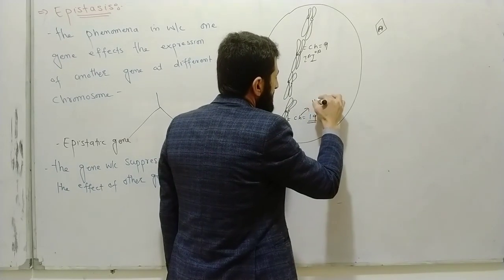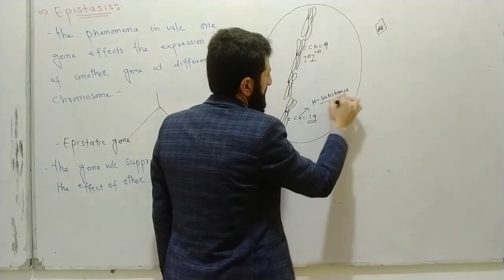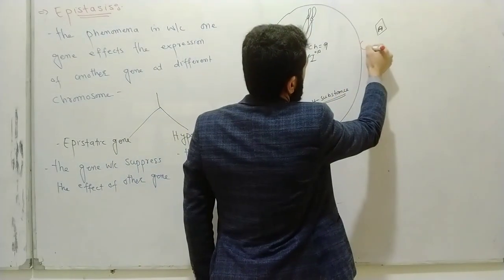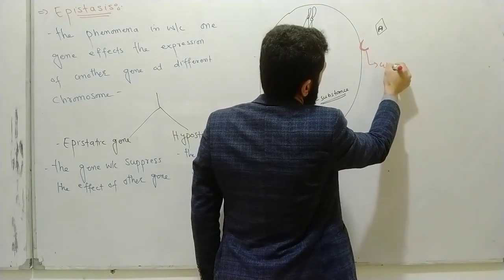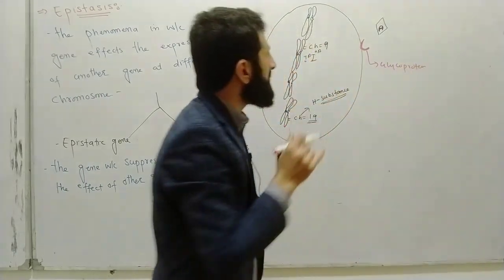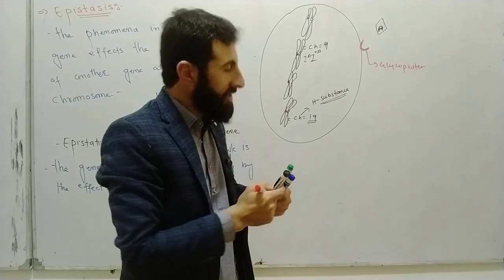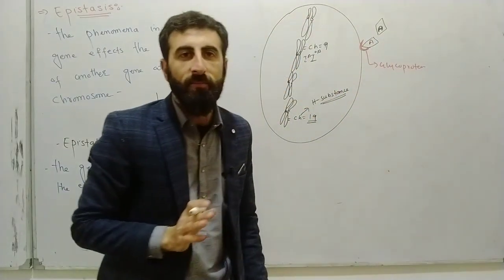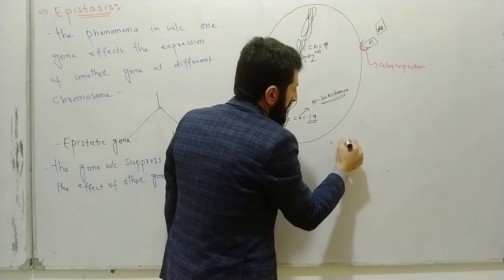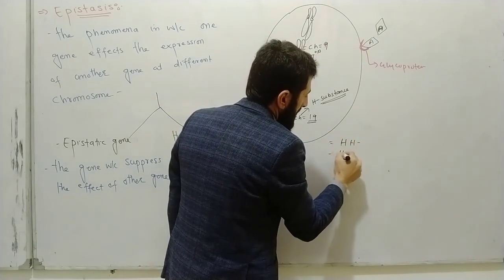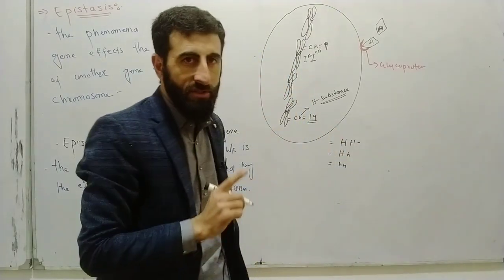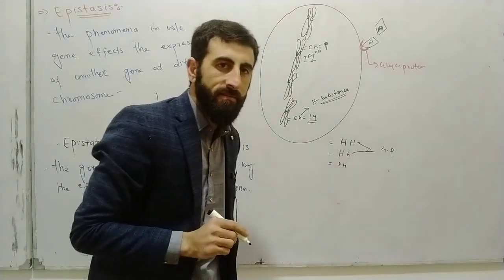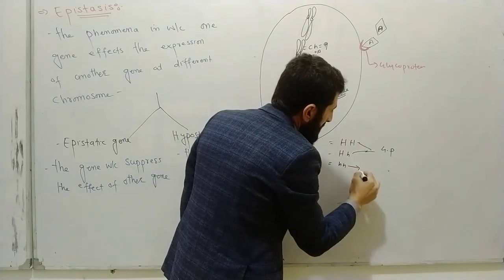The gene IA integrates H substance. H substance is a glycoprotein that provides the receptor site for antigens. If you have capital H capital H, capital H small h, or in the dominant case, this glycoprotein will be produced and will provide the binding site.